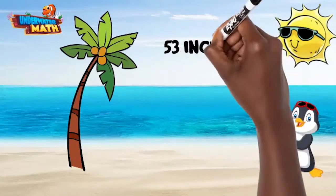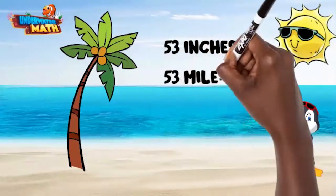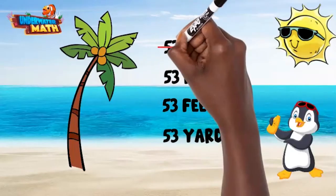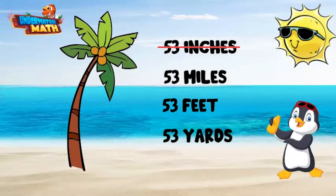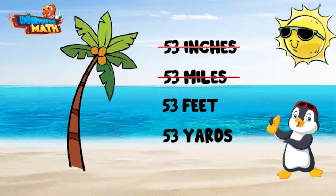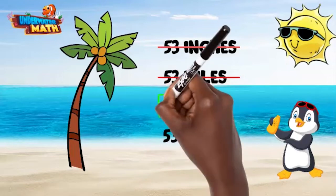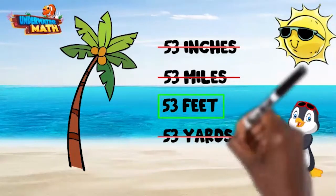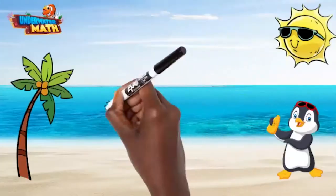Let's try another one. About how tall is a palm tree: 53 inches, 53 miles, 53 feet, or 53 yards? Inches are small and trees are tall, so 53 inches doesn't make sense. One mile has 5280 feet — that would be an extraordinarily tall tree. 53 feet is about the right height of a palm tree and is the correct answer. There are three feet in a yard, so 53 yards does not make sense either.